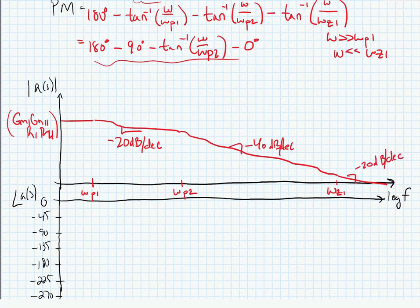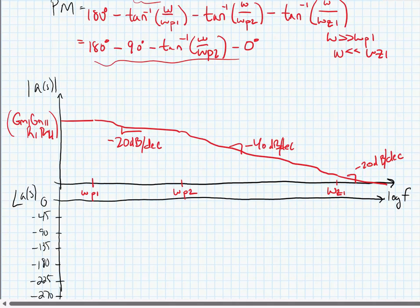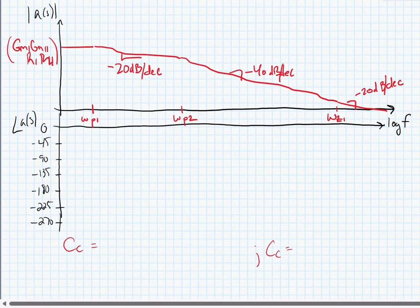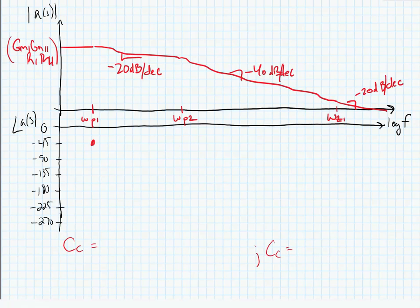Now if we look at our phase shifts: at the pole frequency omega p1, the phase shift is 45 degrees and goes to a total of 90 degrees. At the pole frequency omega p2, the phase shift should be 135 degrees, and at the zero frequency omega z1, the phase shift should be minus 225 degrees. So we should have a scenario with a total of 270 degrees of phase shift.